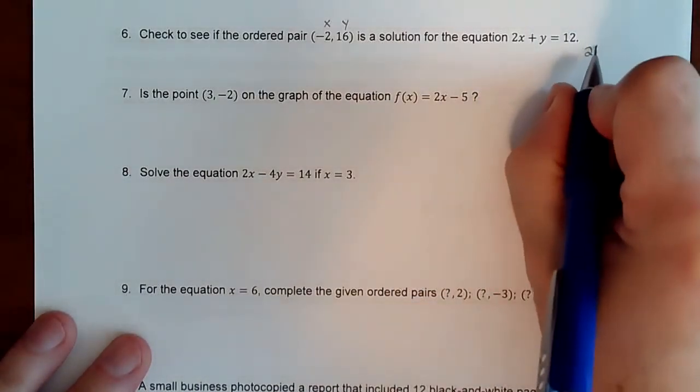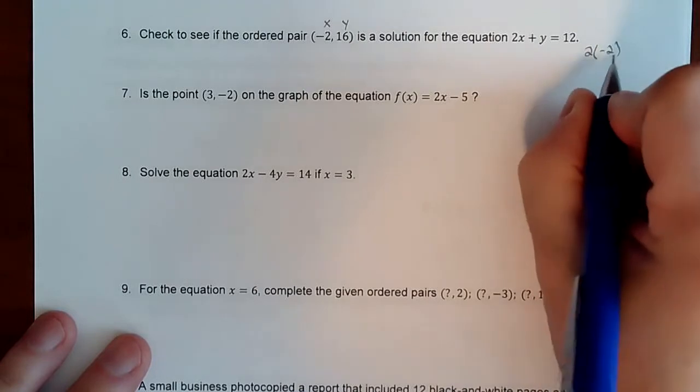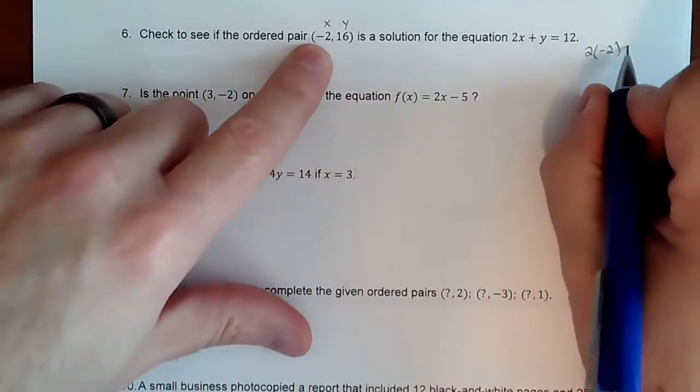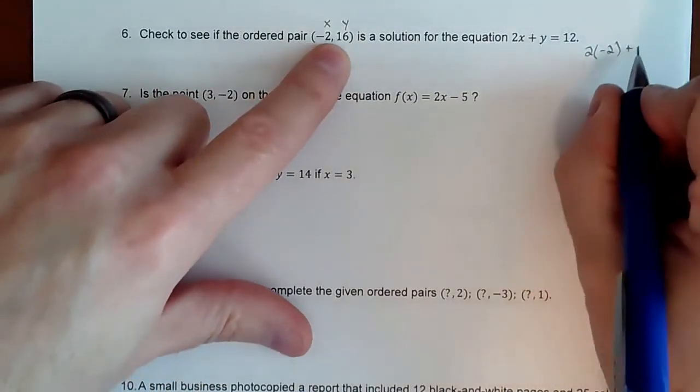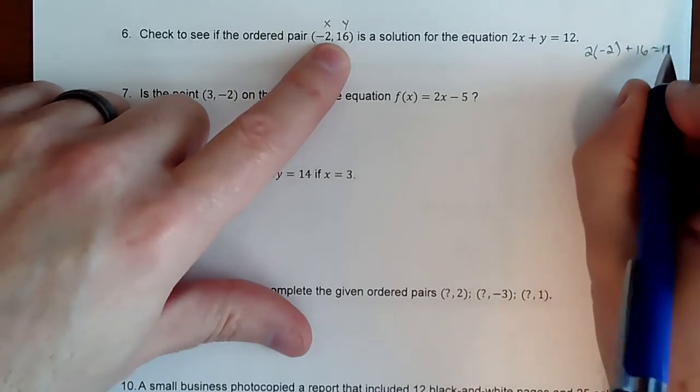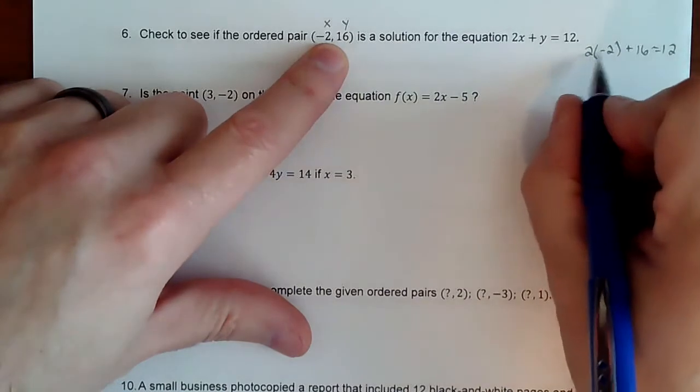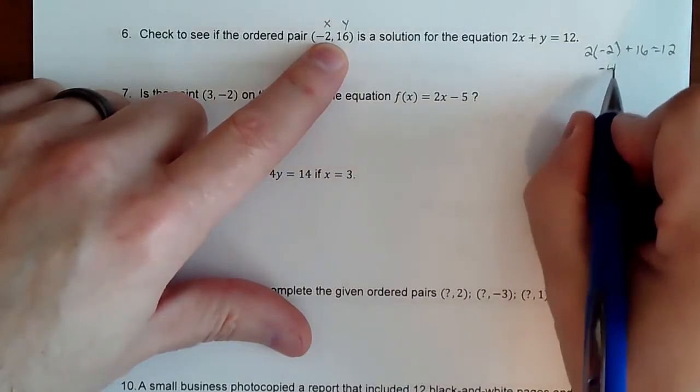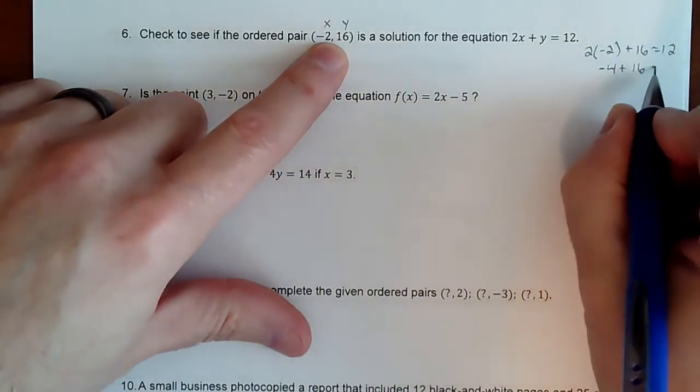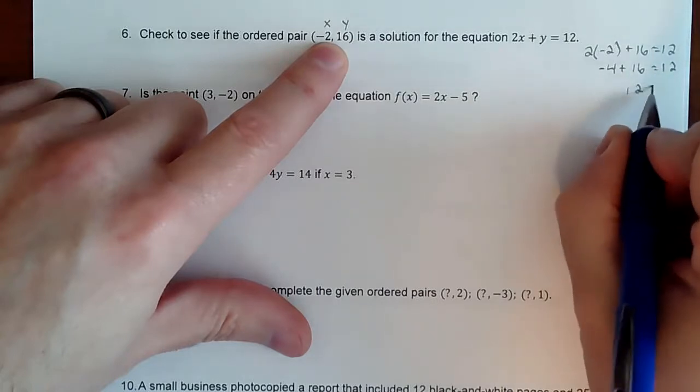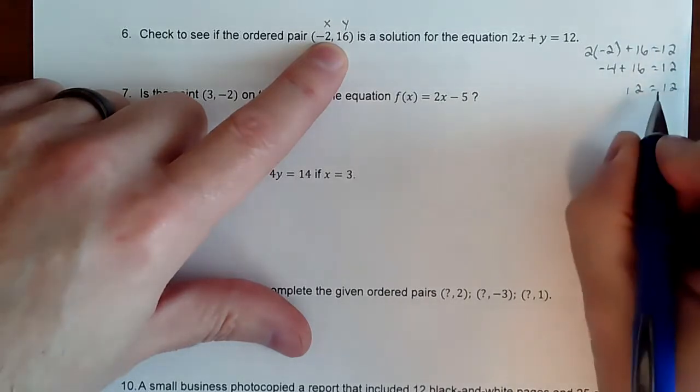We're going to sub in 16 for y, and we're going to see if it works. So we have 2 times negative 2, because that's our x value, plus our y value, which is 16. Does that add up to 12? Don't know. Let's do the math. So 2 times negative 2 is negative 4 plus 16, does that add up to 12?